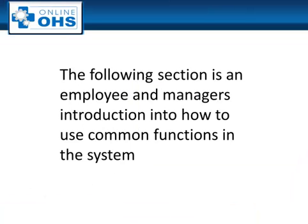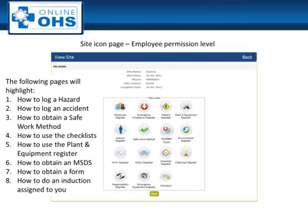The following section is an introduction into how to use common features in the Online OHS system. The Site Icon page has a series of icons. By selecting these icons, an employee or manager can obtain or enter important data into the system. These registers are Site Specific Registers, but will also feature items from the site which has been selected as your company's general site.